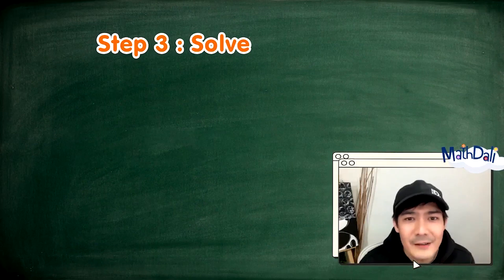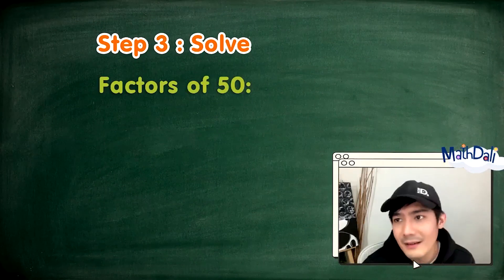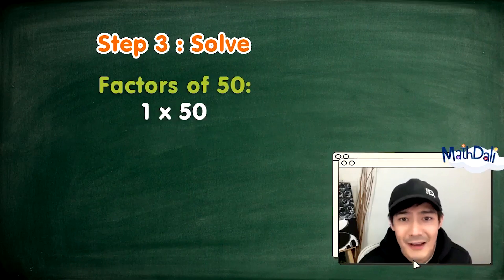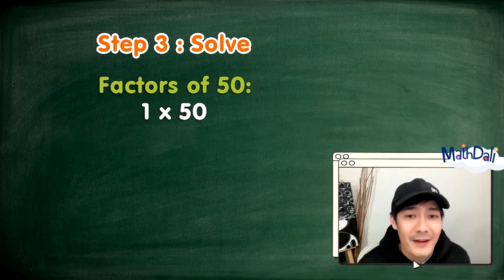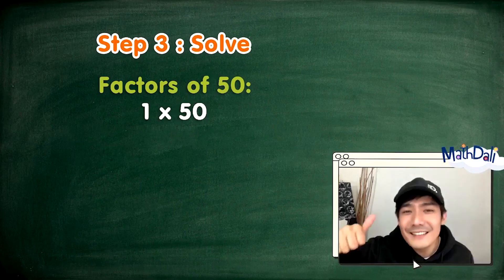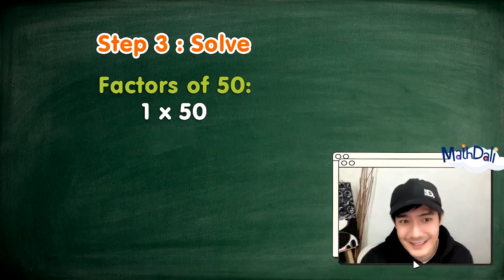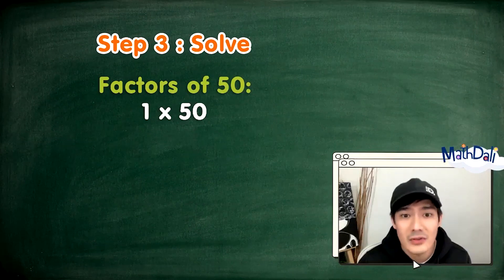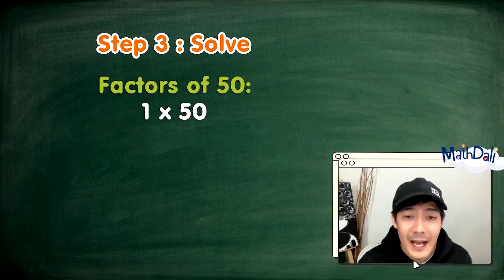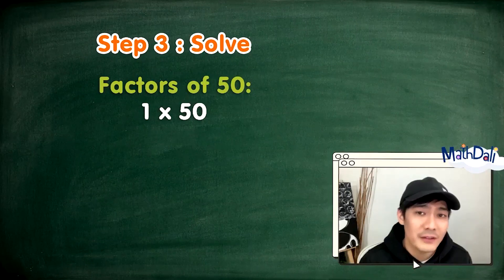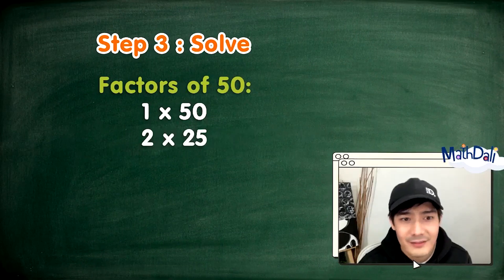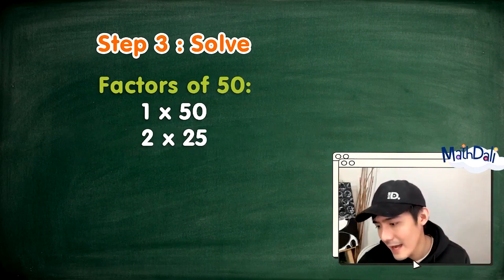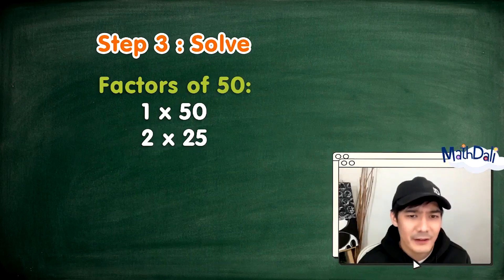Ano nga ba yung factors ng 50? Siyempre, 1 at 50. Pwede natin mahanap ang iba pang factors ng 50 sa tulong ng divisibility rules. Ang 50 ba ay divisible by 2? Yes, dahil ito ay even number. So ang 2 ay factor ng 50, at ang katapat na factor ay 25. Next, let's have 3. Ang 3 ba ay factor ng 50, or is 50 divisible by 3? Hindi.